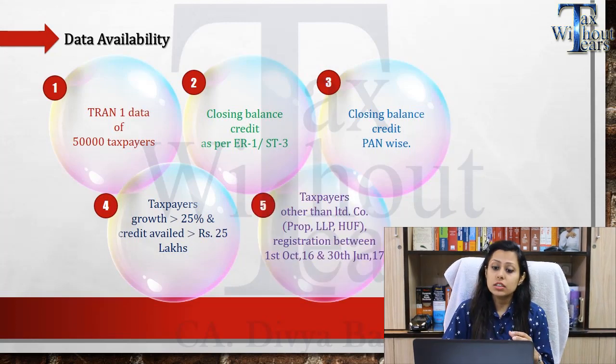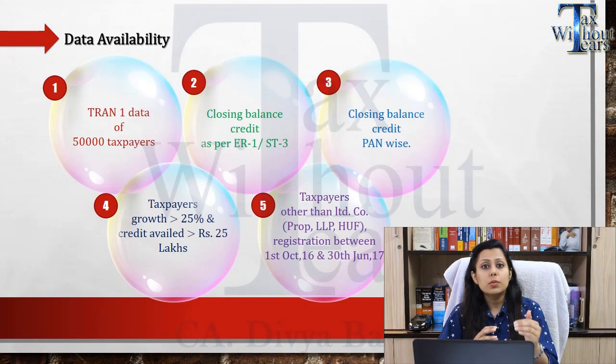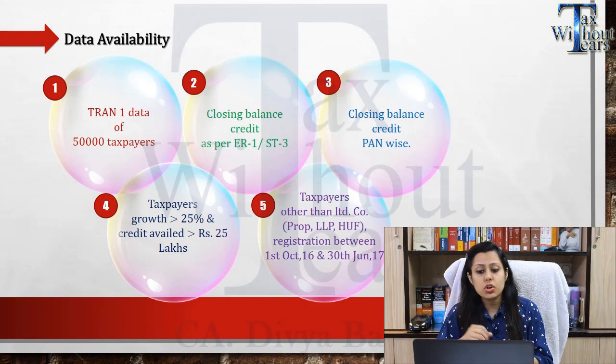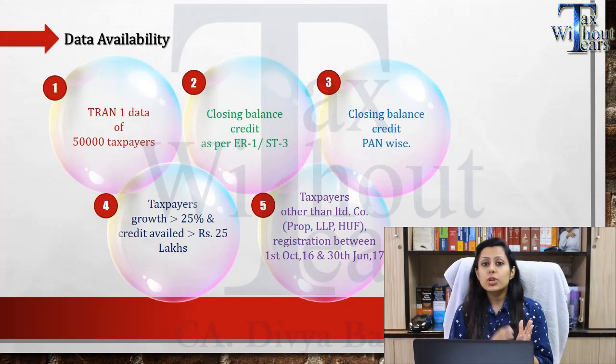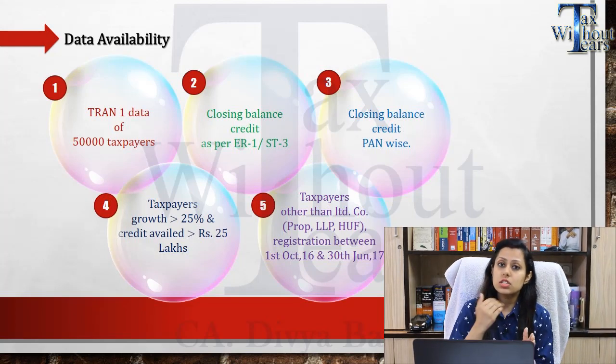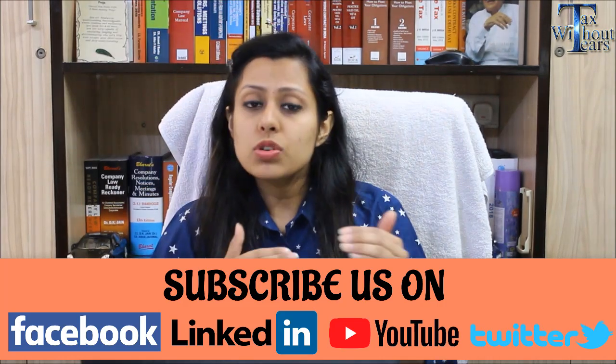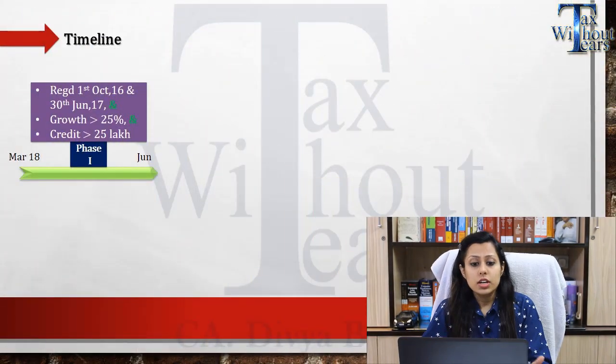Taxpayers other than limited companies — that means proprietors, LLPs, HUFs, etc. — who registered themselves during the period 1st October 2016 to 30th June 2017 are also being checked. These five checks are going on right now by the GST authorities in respect to transitional verification. Their verification targets are planned in phases: from March 2018 till June, they will check taxpayers who registered between 1st October 2016 and 30th June 2017, showed growth of more than 25%, and claimed credit of more than 25 lakhs.